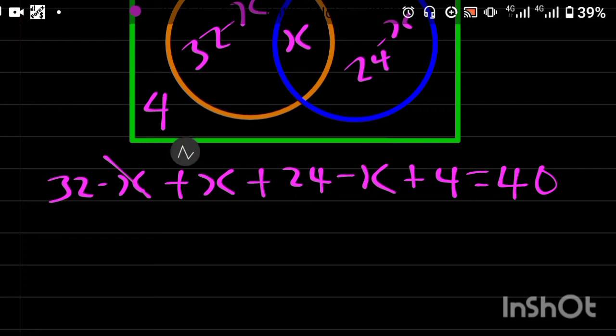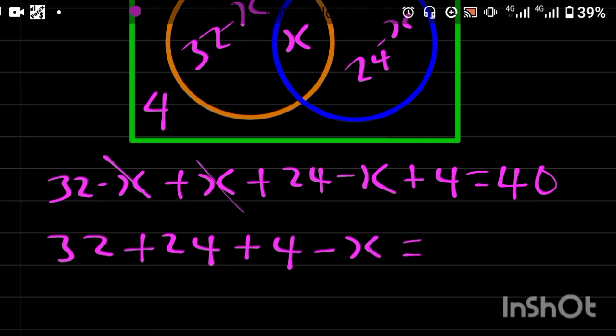Minus X plus X we cancel. So I'm left with 32 plus 24 plus 4 minus X is equal to 40.